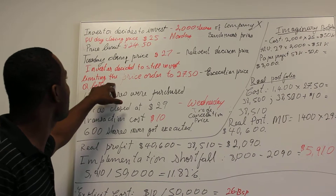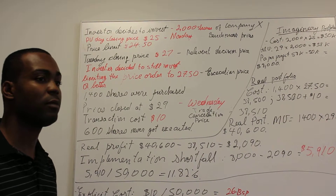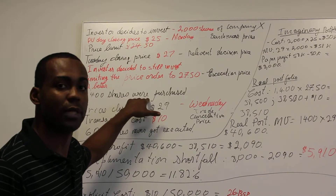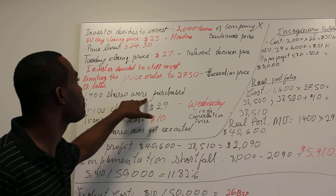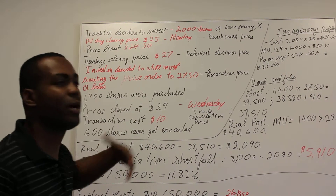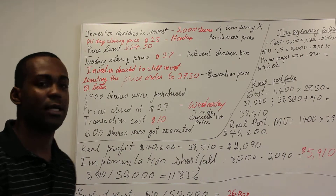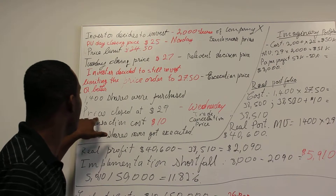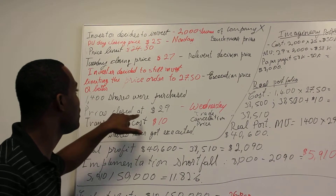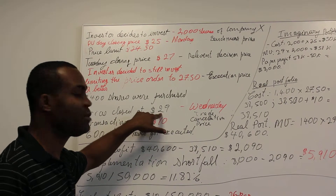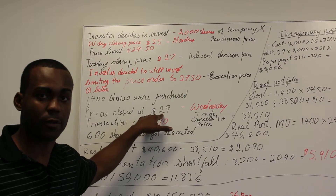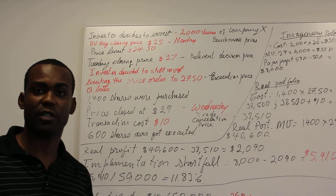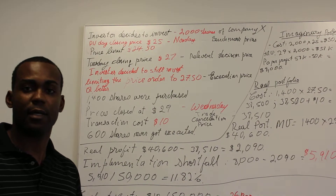On Wednesday morning, the market opens and 1,400 shares get purchased and executed. But the price keeps going up and 600 of the shares never get executed. On Wednesday night, the price per share of Company X closes at $29. Those 600 shares just never went through.